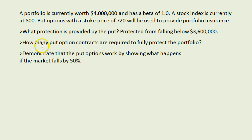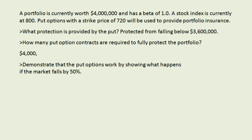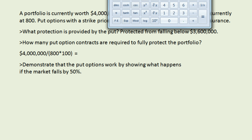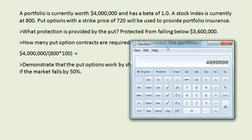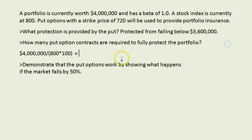The next question is: how many put option contracts are required to fully protect the portfolio? We have four million dollars to protect and we are going to protect it using a stock index that is currently at 800. We want the 800 to be scaled up so that it fully protects 4 million. So 4 million divided by 800 times 100 — since an option represents 100 shares. Pulling up a calculator: 4,000,000 divided by 800 times 100 gives us 50 put option contracts.